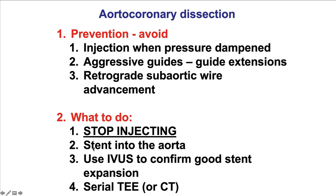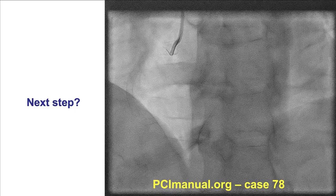The next step is to place a stent into the aorta. Ideally, use IVUS to confirm that the stent covers the ostium and is well expanded. And then, TEE or CT can be used to monitor the extent and size of the hematoma in the aortic wall.